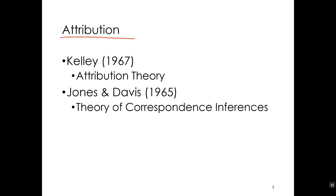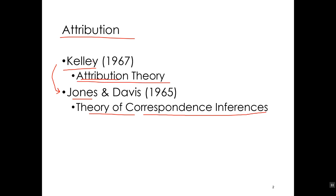Heider originally developed the idea of attribution theory, then he left to do something else. Kelly came up with his attribution theory, or theory of attribution. And then something interesting happened. Edward E. Jones came up with his theory of correspondent inferences — another attribution theory based on Heider. But why correspondent inferences?